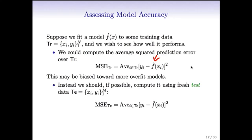Instead, we should if possible compute it using a fresh test data set, which we'll call Te—an additional M data pairs (Xi, Yi) different from the training set. Then we compute the similar quantity: MSE_Te. That may be a better reflection of the performance of our model.